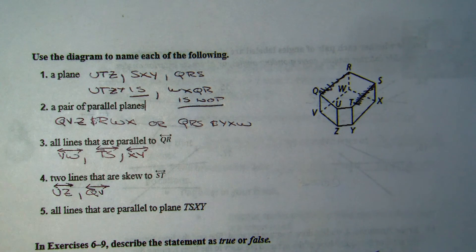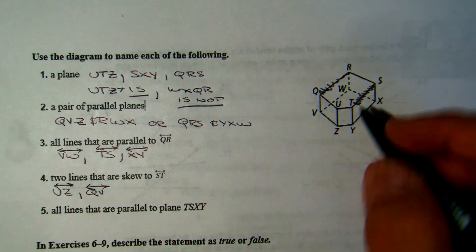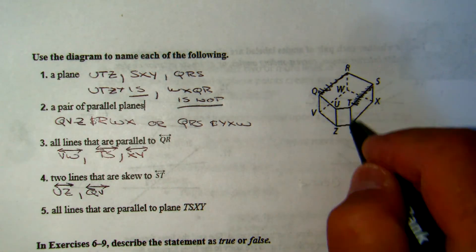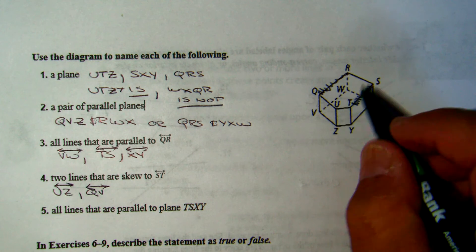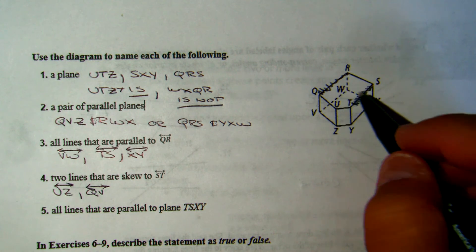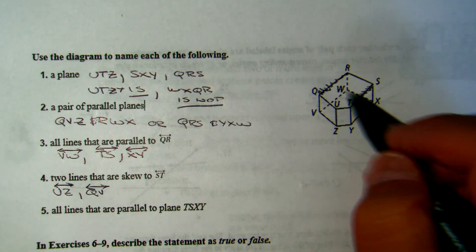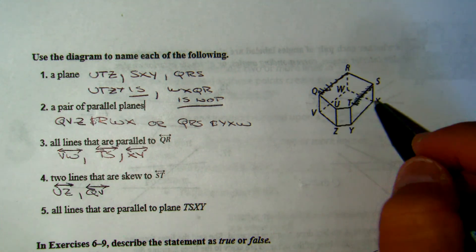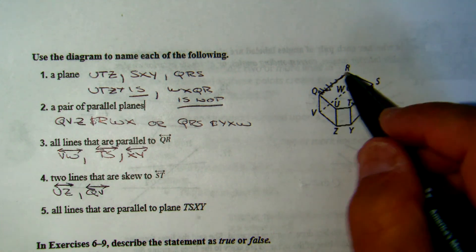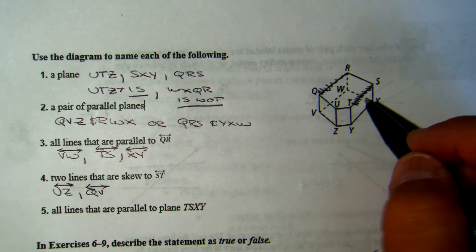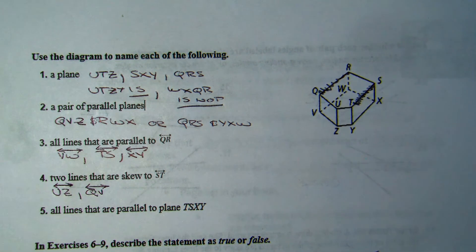When going more than three letters, realize they have to be co-planar. So UTZ-Y is co-planar, but if we go WX-QR it is not, because WX and QR are in different planes — they're skew lines.